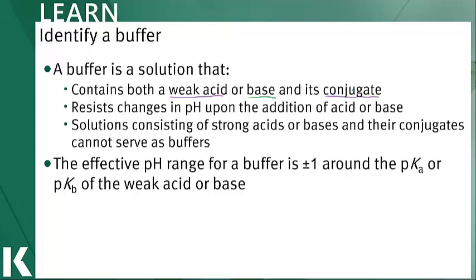When we look at a buffering solution, the effective pH range that we see is very close to the pKa of the weak acid or the pKb of the weak base. In general, the effective range is within plus one or minus one of that pKa or pKb. If it's only plus or minus one, this means it's resisting that change to pH when we're adding acid or base to it.